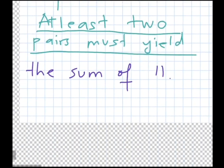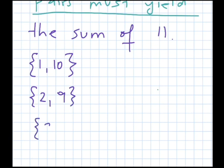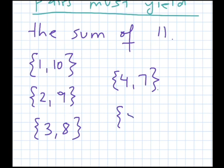How does the pigeonhole principle come into play here? We are choosing from numbers 1 to 10 and we want pairs that yield the sum of 11. So we find the pairs for which the sum of 11 is achieved: 1 and 10, 2 and 9, 3 and 8, 4 and 7, and 5 and 6.